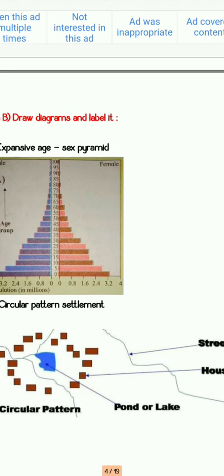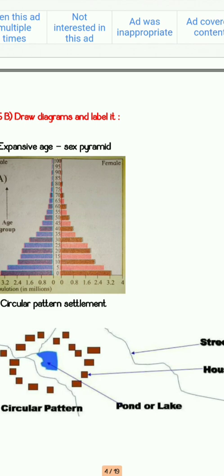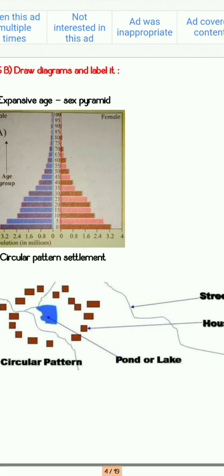The next part asks to draw diagrams and label them. The first diagram here is the expansive age-sex pyramid. This is a sure-shot diagram which may come in the exam. You have three types of population pyramids: expansive, constructive, and stationary. In expansive, the base is broad and the apex is narrow. In constructive, it is the opposite — the base is narrow and the apex is broader. In stationary, it looks quite similar throughout the stages.